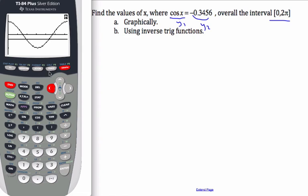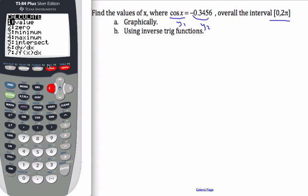So I go second, trace, which is my calculate menu. This is a brilliant menu, this calculate menu here. And I'm looking for number 5, the intersection.